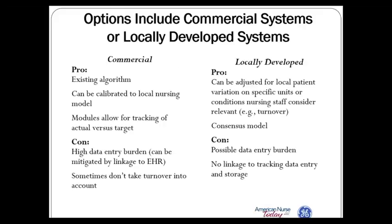When we look at the range of systems out there, there are commercial systems you can adopt, and we also see many locally developed systems. The advantages of commercial systems are they use an existing algorithm, so you don't have to develop your own. They can be calibrated to the local nursing model, and modules can be implemented that track actual versus target staffing. The 2011 New England Journal article was heavily dependent on the fact that the academic medical center involved had a commercial system in place.